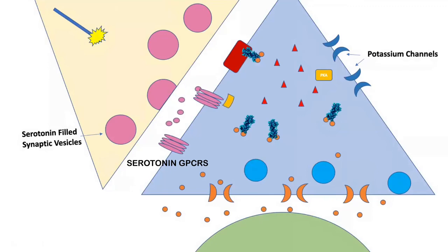The alpha subunit then triggers the already activated adenylyl cyclase from calmodulin, converting even more ATP to cyclic AMP.